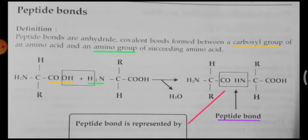Covalent bonds are formed between a carboxyl group, which is underlined with the same color in the description and also in the first amino acid illustration. And then the amino group of the succeeding amino acid — in the second amino acid, you can see the amino group underlined and also in the description with the same color. Hence, the carboxyl group of the first amino acid and the amino group of the second amino acid are going to react to form a peptide bond.